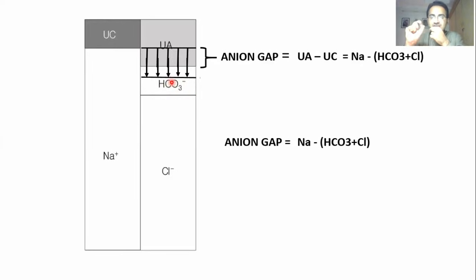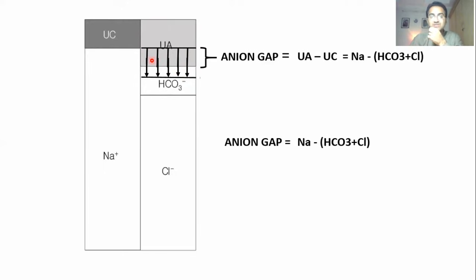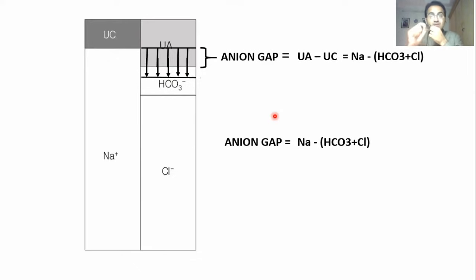Acid neutralizes bicarbonate, there is a reduction in the level of bicarbonate, and that reduction is compensated by an increase in unmeasured anions. Whenever there is an increase in unmeasured anions, the anion gap also increases. So in this situation — where acid neutralizes bicarbonate and bicarbonate decreases — unmeasured anions increase and our anion gap value increases.